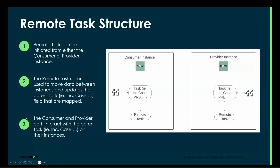That then creates the task type defined within the remote task definition. A remote task definition is a combination of: what is the task type, what fields are being sent outbound or received inbound, and the mappings. Both the consumer and the provider then work within a specific task type such as an incident, case, or problem. The remote task record itself is essentially a pass-through record, and the arrow shown is bi-directional between the instances. You define within the definition what you want to update — whether you're sending all fields back and forth or only some.